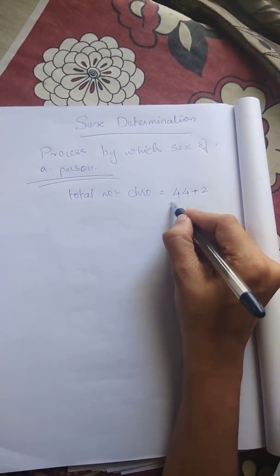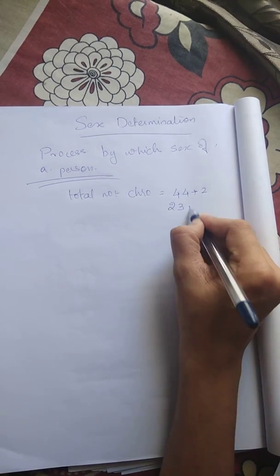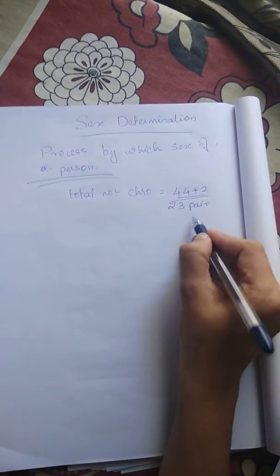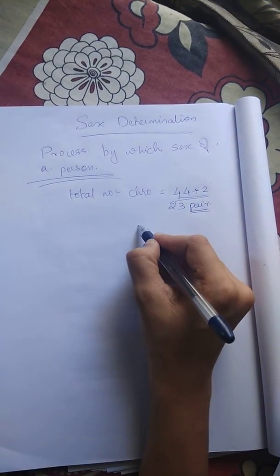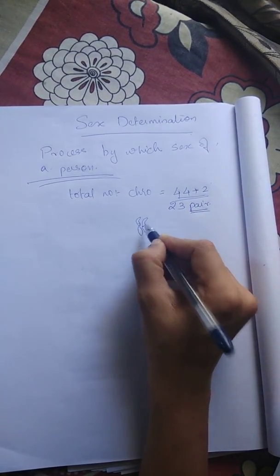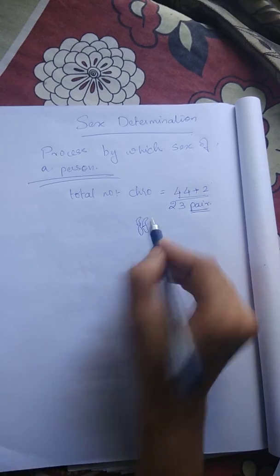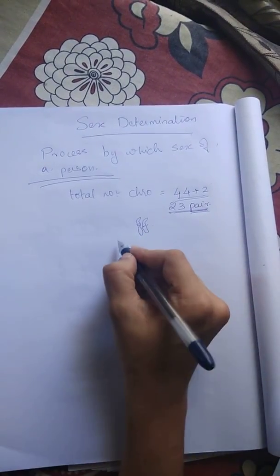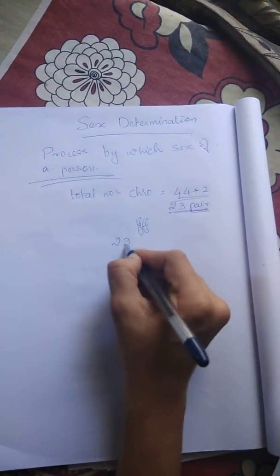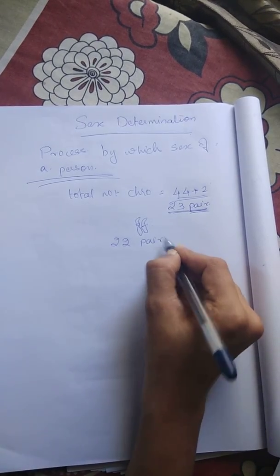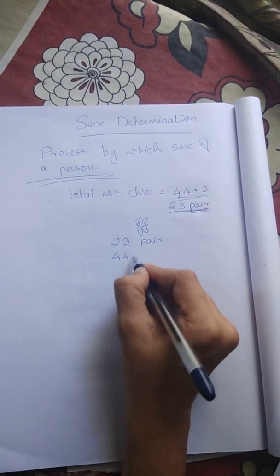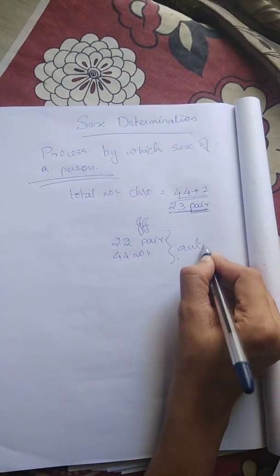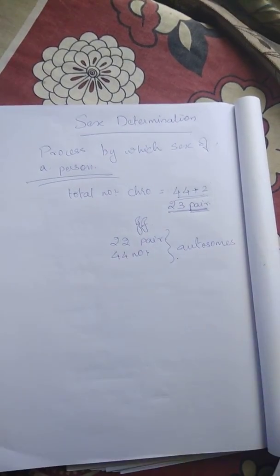The total number of chromosomes in humans is 44 plus 2, that is what we call 23 pairs. So 44 plus 2 — we call it 2 chromosomes making a pair, that is 23 pairs, that is 22 pairs amounting to 44 number of chromosomes.